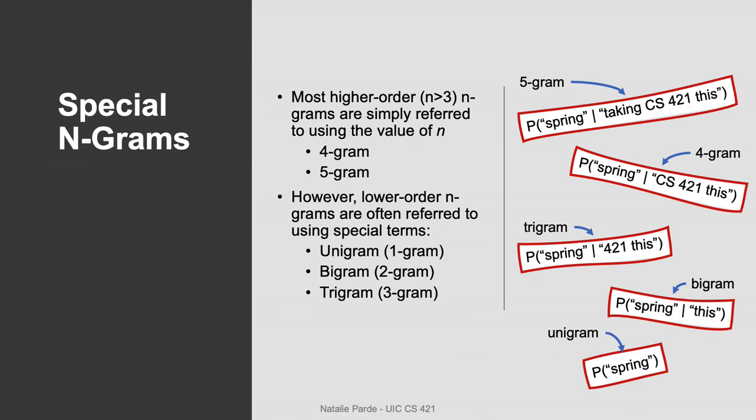It's conventional to refer to lower order n-grams in natural language processing with specific terms. We refer to single-word n-grams as unigrams, two-word n-grams as bigrams, and three-word n-grams as trigrams. In general, higher order n-grams are just referred to using the value of n. So four-word n-grams are just called four grams and five-word n-grams are just called five grams.